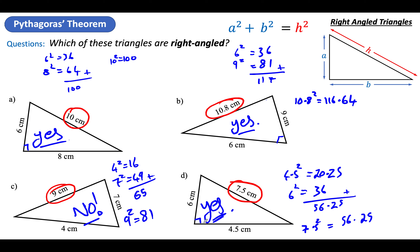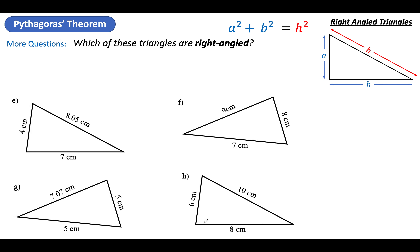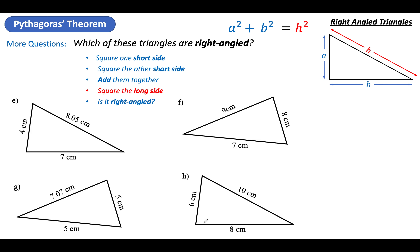I hope you did alright with that, because you've got 4 more. The checklist: square one short side, square the other short side, add them together, square the long side — is it right-angled? Pause the video.